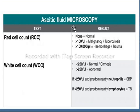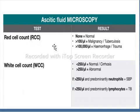Ascitic fluid microscopy provides information about the number and type of red blood cells and white blood cells within the fluid, which can help narrow the differential diagnosis. Microscopic examination includes RBC count, WBC count, Gram staining, and Ziehl-Neelsen staining, usually for bacterial pathogens.